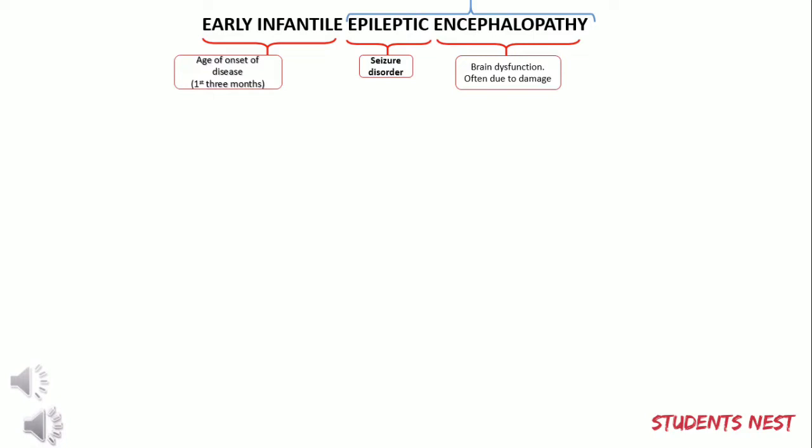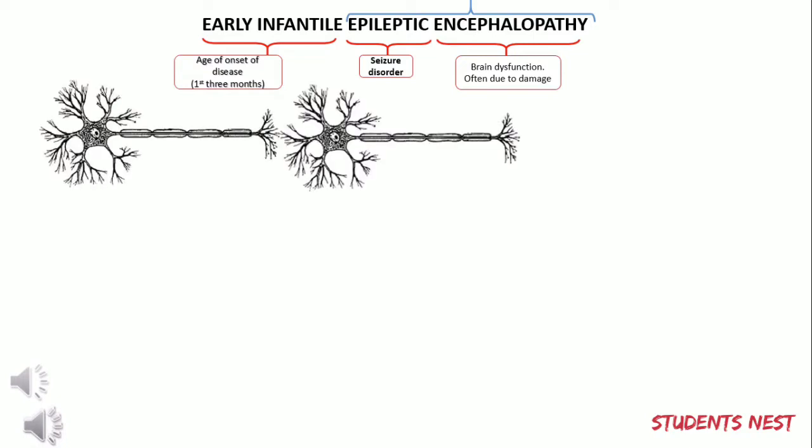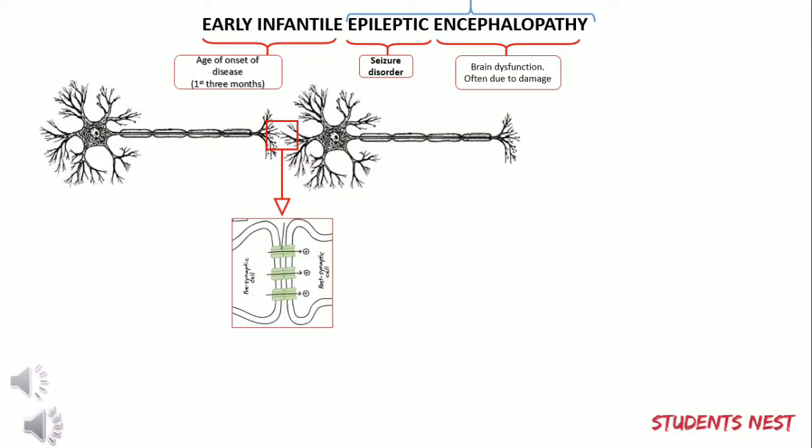Our nervous system is made up of specialized cells called neurons which receive and send electrochemical signals from other neurons. Two neurons communicate at the synapse, where one neuron sends neurotransmitters to the next neuron. Neurotransmitters are the chemical messengers of the body, used by the nervous system to send signals between neurons.